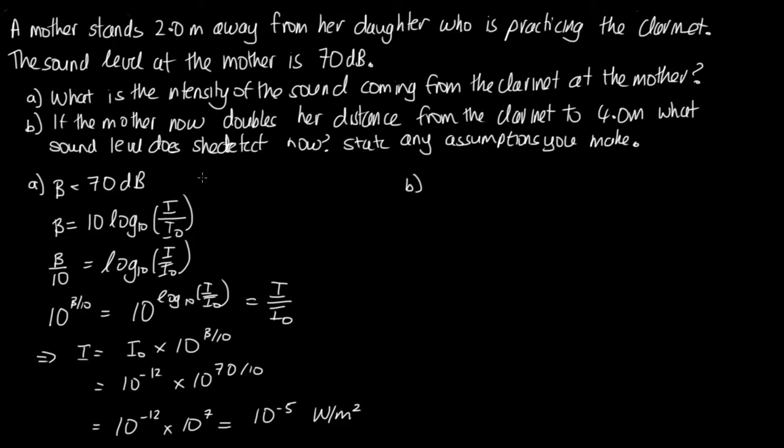In part (b) the mother's now going to double her distance and we've got to calculate the sound level again and we need to state any assumptions we make. Previously we've looked at how intensity changes with distance and we've said that intensity is equal to P, the power, over 4 pi r squared and this power is staying constant. So the intensity decreases as 1 on r squared where r is the distance. So if we double the distance then the intensity goes down—that will be one quarter of the old intensity as we've doubled this distance here.